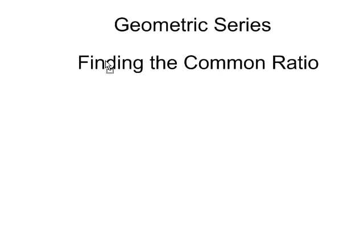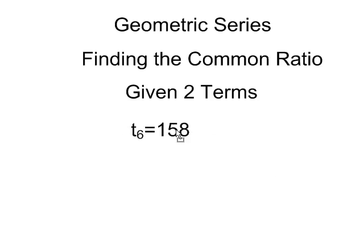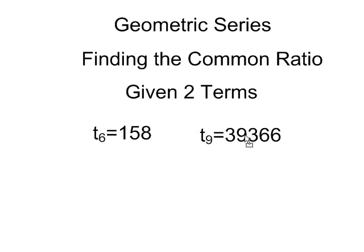We're going to be finding the common ratio of a geometric series when we're given two terms. For example, if we know that term 6 is 158 and term 9 is 39,366, how do you find the common ratio that generated those two terms in that sequence?